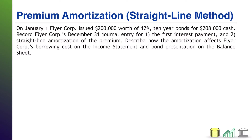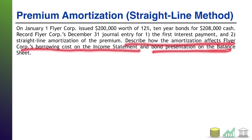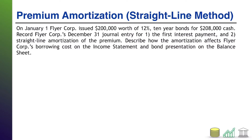In addition, beyond the journal entry, just to make sure you have a good understanding, ask yourself if you understand how the amortization affects FlyerCore's borrowing cost on the income statement and bond presentation on the balance sheet. Take a moment, pause the video, try this out for yourself, and when you're ready, come on back. I'll walk you through the solution.